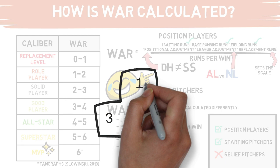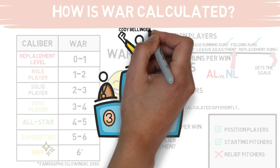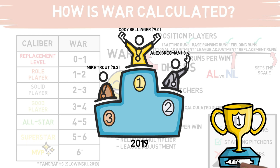To give you an idea of how the 2019 season played out, here are the top WAR producers. Bringing home the gold was Cody Bellinger with a whopping 9.0 WAR. Next was Alex Bregman with an 8.4 WAR. In third was Mike Trout with an 8.3 WAR. The first pitcher on the list ranked fifth: Justin Verlander with a 7.8 WAR.